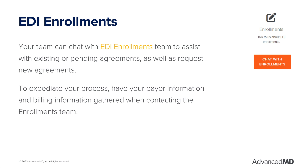Your team can chat with the EDI Enrollments team to assist with existing or pending agreements as well as request new agreements. To expedite your process, have your payer information like CPID number and billing information gathered when contacting the Enrollments team.